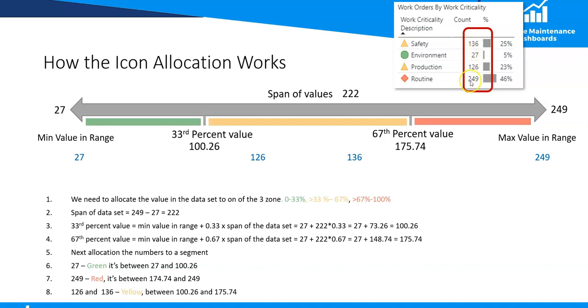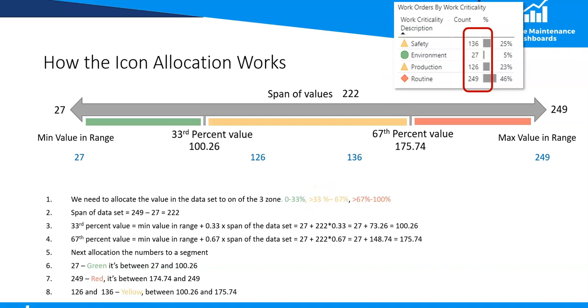The span of the values that are being displayed in the current filter context in this table are the four rows that we are showing. Hopefully you found that useful and you can actually understand how this has been allocated.